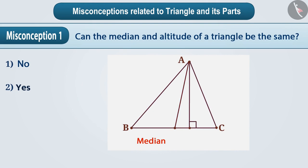Often in the examples, the median and the altitude are represented by different line segments. Because of which, children believe that the median and the altitude are always two different line segments.